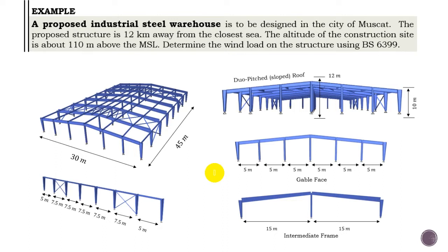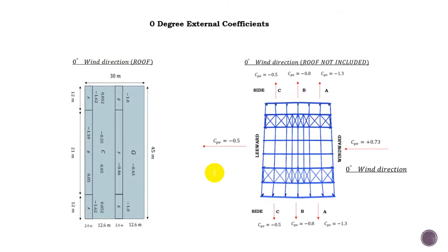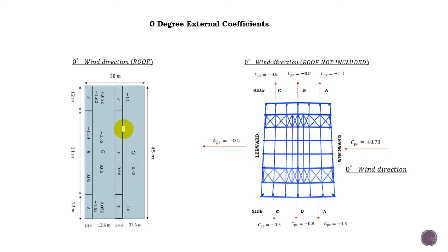Let's get started. This is our example and we paused the video with a number of cases. For the zero-degree external coefficients we need to divide the zero-degree wind direction into two cases, because the internal pressure has two scenarios: positive 0.2 and negative 0.3. This is the zero-degree external coefficients and we have all the vertical external coefficients for the vertical walls and for the roof.